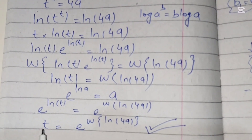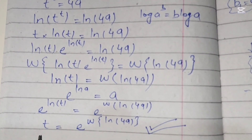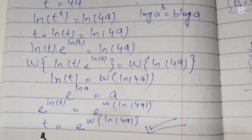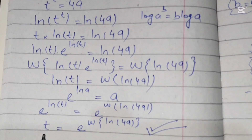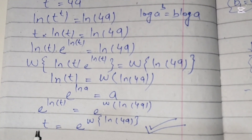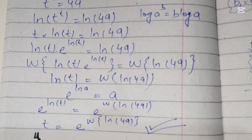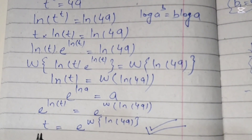We had to use the Lambert W function to find the value of t because this is a transcendental equation — we cannot use basic algebra since t appears both in the base and the exponent. I hope you understood this video. Please like, share, and subscribe to my channel, and don't forget to press the bell icon.